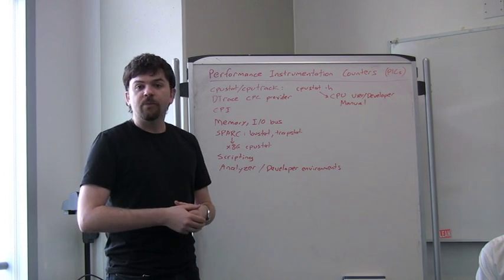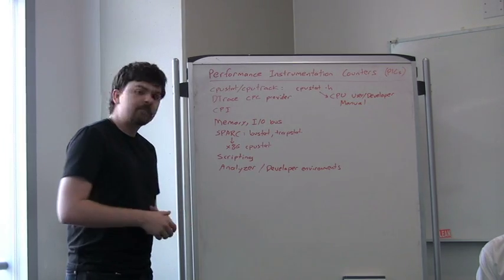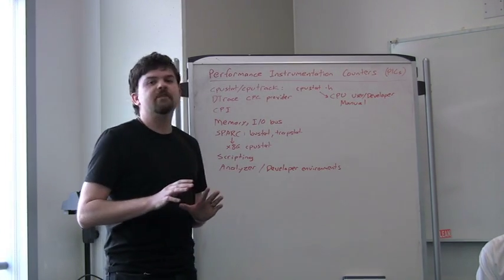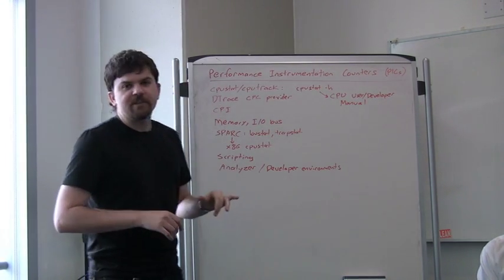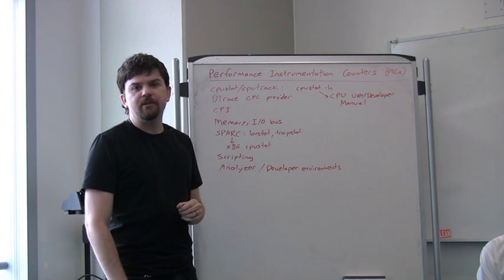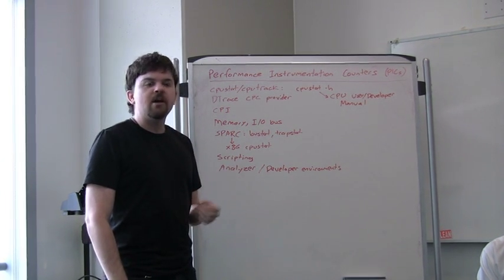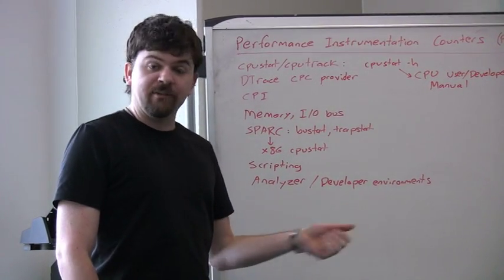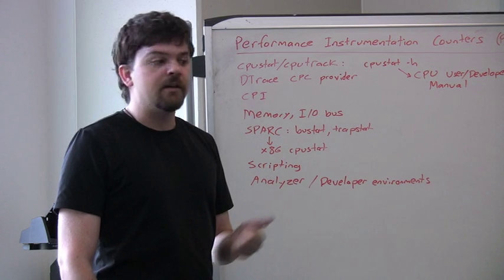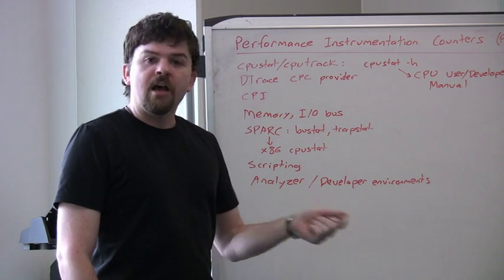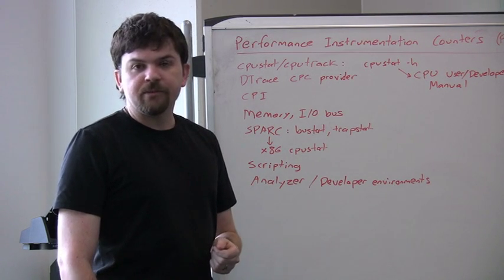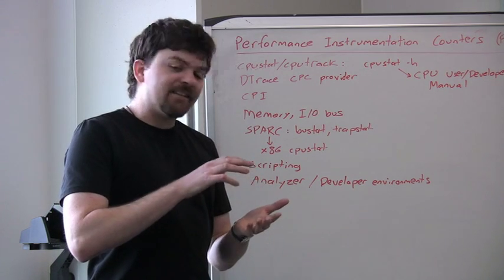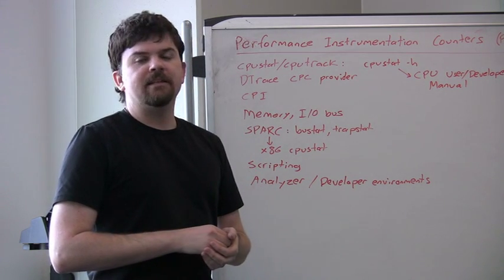Performance instrumentation counters are registers on CPUs - that's how they're usually implemented. They can give information on what the CPU is doing, such as the number of instructions it's executing, memory stall cycles, I/O bus transactions.